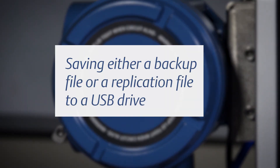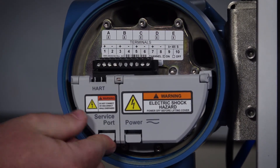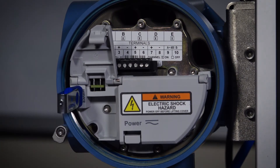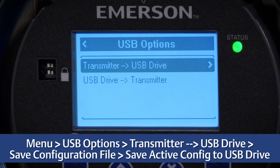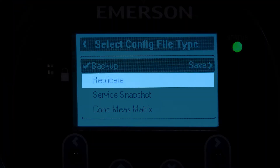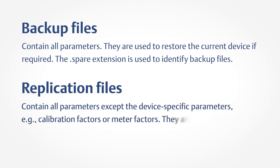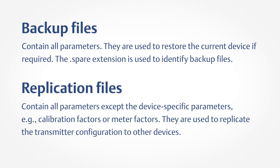To save the current configuration to a USB drive as either a backup file or a replication file, first open the wiring compartment on the transmitter and insert a USB drive into the service port. Choose Menu > USB Options > Transmitter > USB Drive > Save Configuration File > Save Active Config to USB Drive. Second, choose backup or replicate on the display screen. Backup files contain all parameters and are used to restore the current device if required; the spare extension is used to identify backup files. Replication files contain all parameters except device-specific parameters, such as calibration factors or meter factors, and are used to replicate the transmitter configuration to other devices.